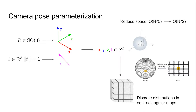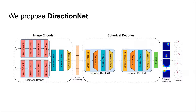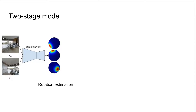To recover these directions from distributions, we compute the spherical expectation on each distribution. To realize this idea, we introduce DirectionNet, which maps image pairs to a set of directional probability distributions over the sphere. We adopt an encoder-decoder style architecture that learns the cross-domain mapping from images to a spherical representation. We convert the distributions to vectors by finding their expected values. The rotation matrix is approximated using SVD if we output three vectors, or alternatively using Gram-Schmidt with just two vectors.